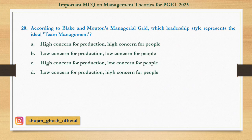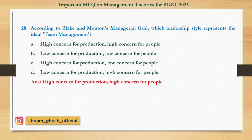Question number 20: According to Blake and Mouton's managerial grid, which leadership style represents the ideal team management? Option A: High concern for production and low concern for people. B: High concern for production and high concern for people. Answer is High concern for production and high concern for people.